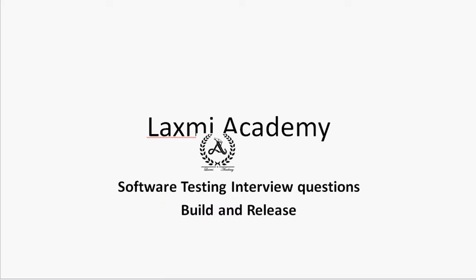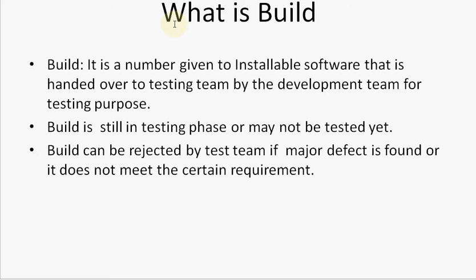A build is a number given to installable software that is handed over to the testing team by the development team for testing purposes. When the development team finishes writing a piece of code which is testable — a complete application within itself — it is handed over to the testing team. Build numbers are assigned to make communication easier, for writing bugs, emails, or any communication referencing which build a bug belongs to.